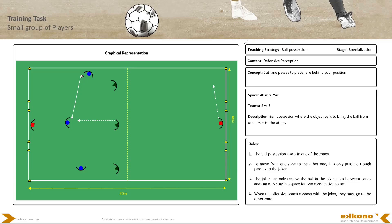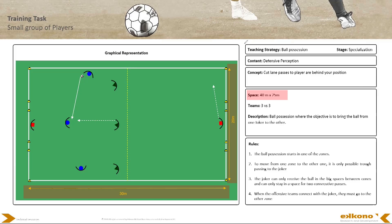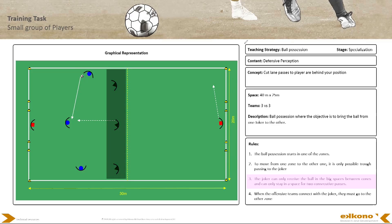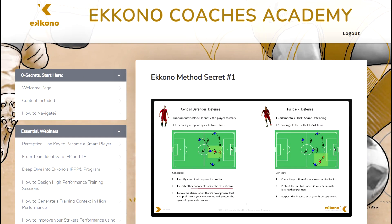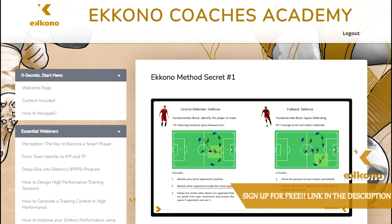This is a great training drill for working on interceptions. You need two teams of three and two jokers, moving the ball from one zone to the other. You can play it either by passing the ball to the joker or dribbling past the other team into the next zone. After every three passes the joker is allowed to move to one of the spaces — this forces defenders to check the joker's position while moving, improving decision-making on where to block the passing lane while pressing. Use the code METSUJR to get your first 15 days for free via the link in the description.